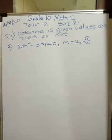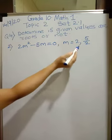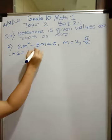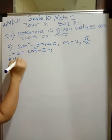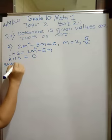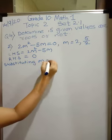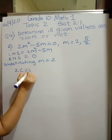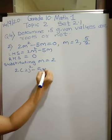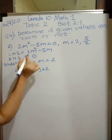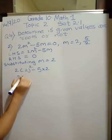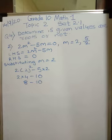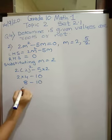This is the second equation. We have to check whether M = 2 or M = 5/2 are solutions. LHS is 2M² − 5M and RHS is 0. First substituting M = 2: 2(2²) − 5(2) = 2(4) − 10 = 8 − 10 = −2. LHS = −2, RHS = 0, so −2 ≠ 0, meaning LHS ≠ RHS, and therefore 2 is not the root.